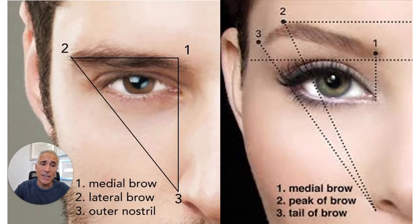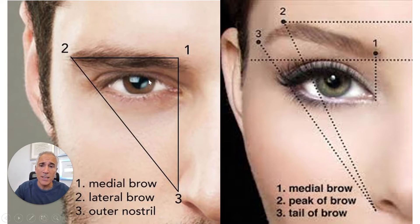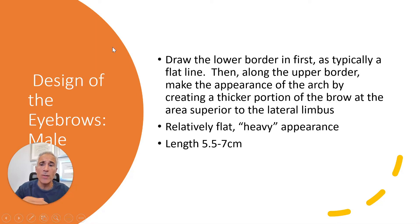You can see a classic example of the male versus the typical female eyebrow. The arch is more lateral. With the male, it's a flatter lower border, with the appearance of an arch — I'm going to go into that.